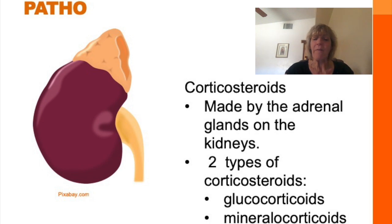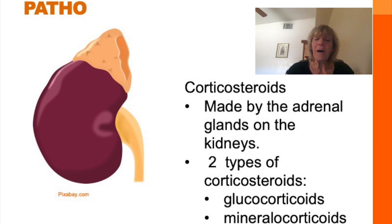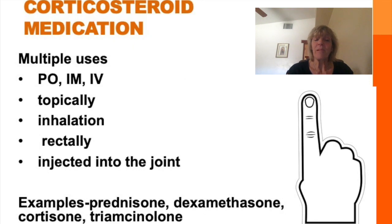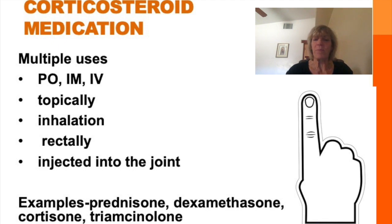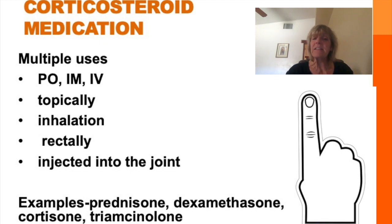That's why they're used. Mineralocorticoids, which include aldosterone, regulate the balance of water and salt in the body. Corticosteroid medications are synthetic drugs that closely resemble cortisol — our stress hormone made by the adrenal glands. Corticosteroid drugs are very powerful and they're used to prevent or limit inflammation by suppressing the immune system.